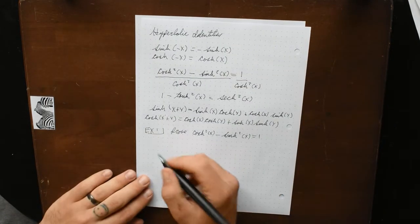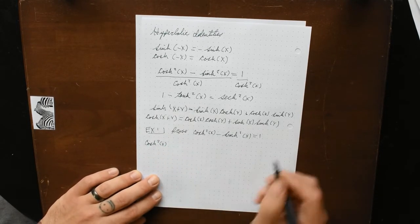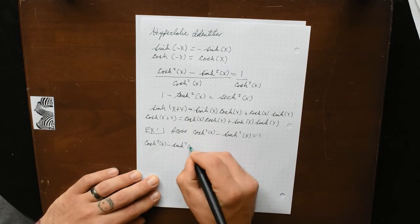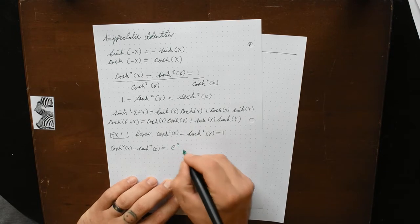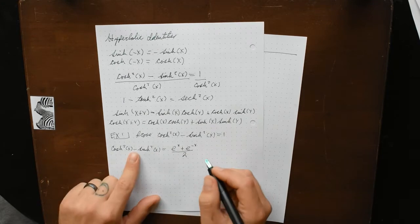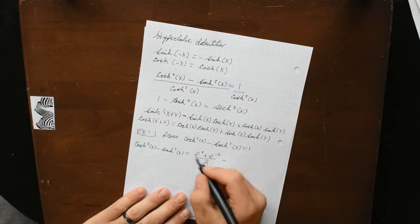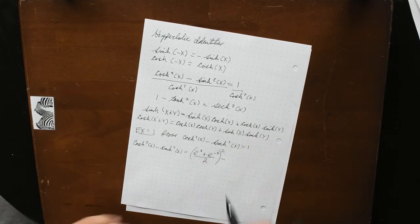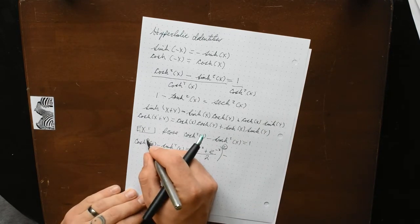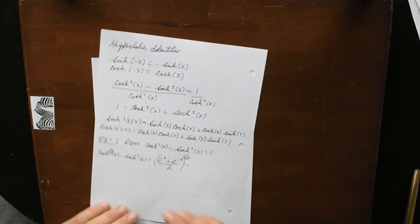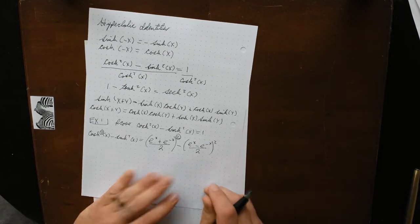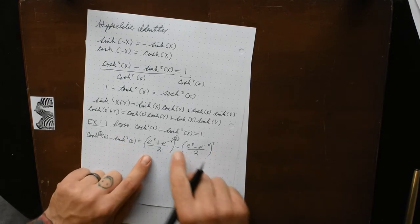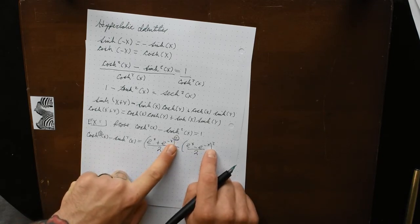By definition, cosh²(x) minus sinh²(x) equals [(e^x + e^(-x))/2]² minus [(e^x - e^(-x))/2]². So we've done this substitution — now let's multiply out those squared terms.